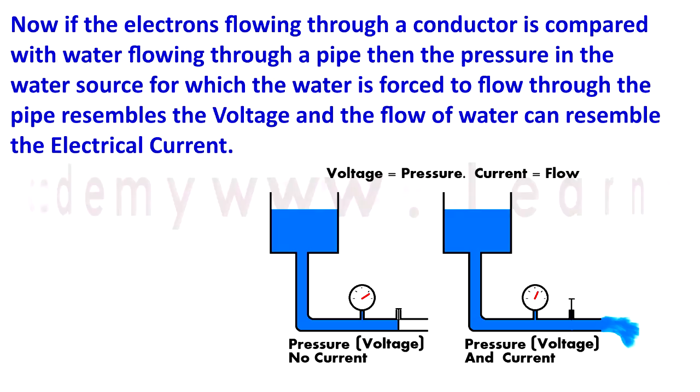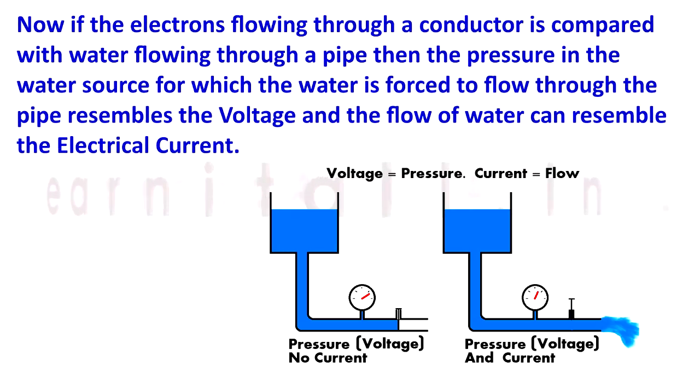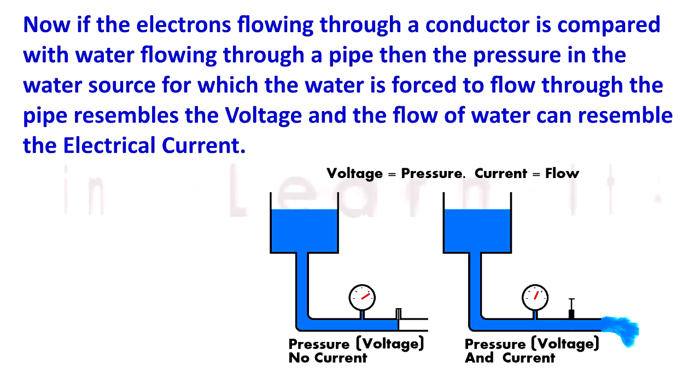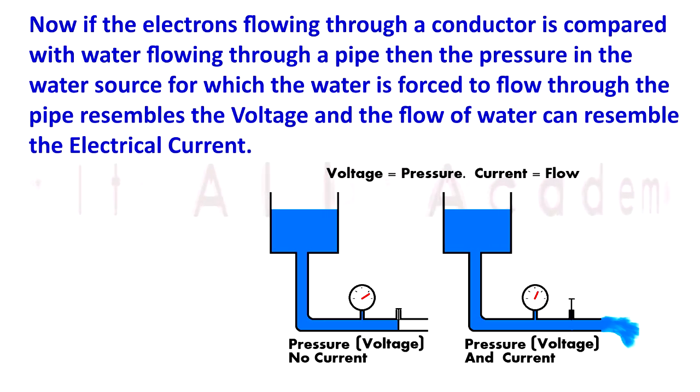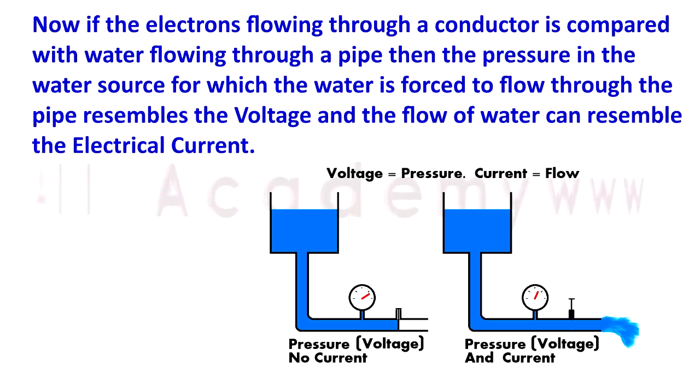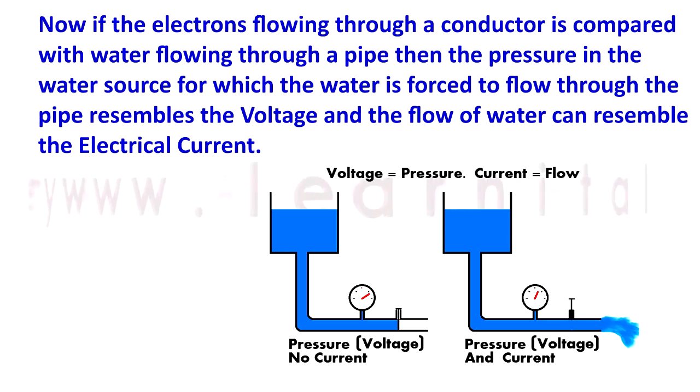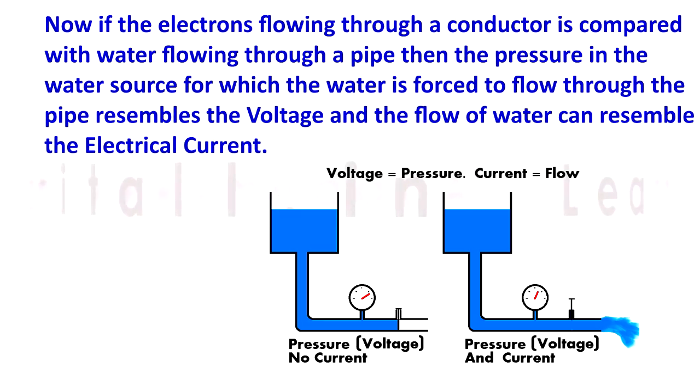Now if the electrons flowing through a conductor is compared with water flowing through a pipe, then the pressure in the water source for which the water is forced to flow through the pipe resembles the voltage. And the flow of water can resemble the electric current.